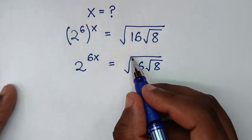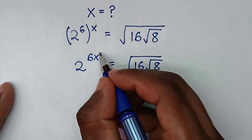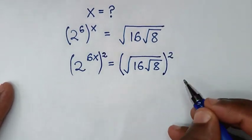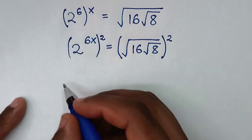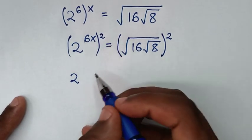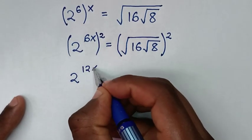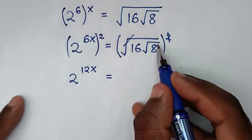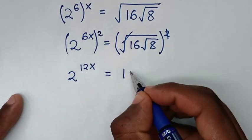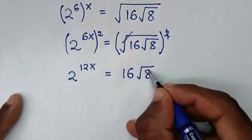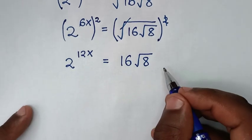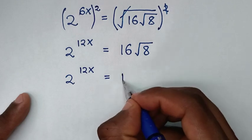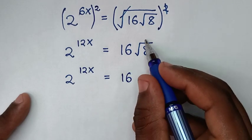To remove the outer square root, we square both sides. Squaring gives 2 power of 12x on the left side. On the right side, the square root cancels the square, leaving us with 16 times the square root of 8.